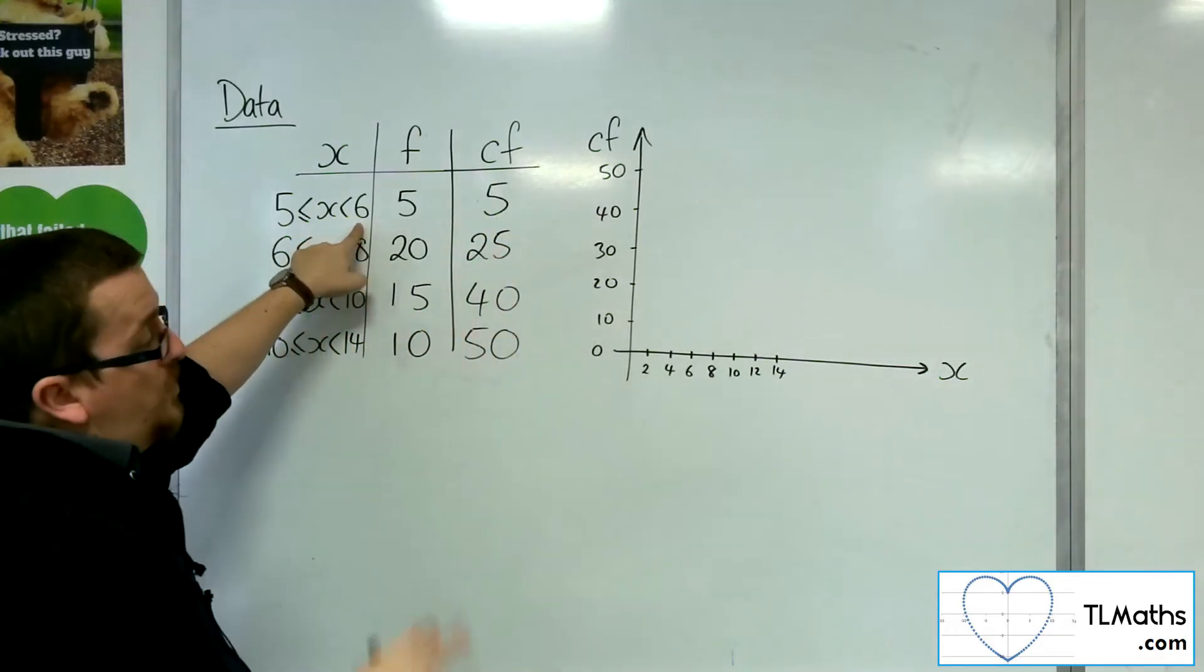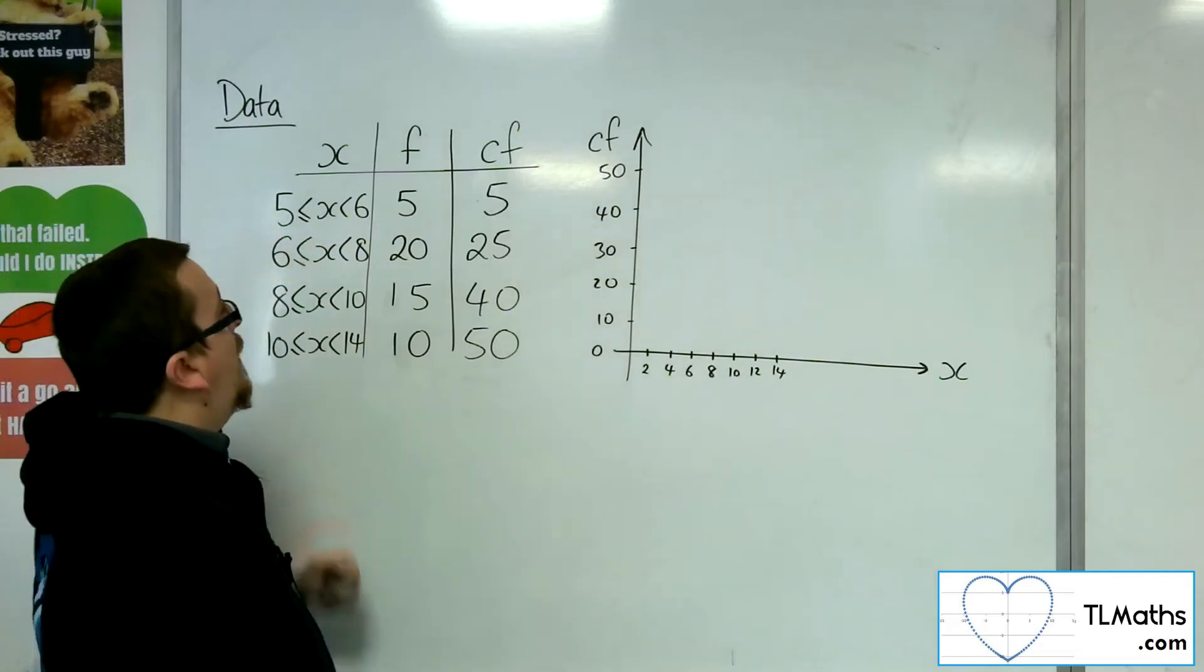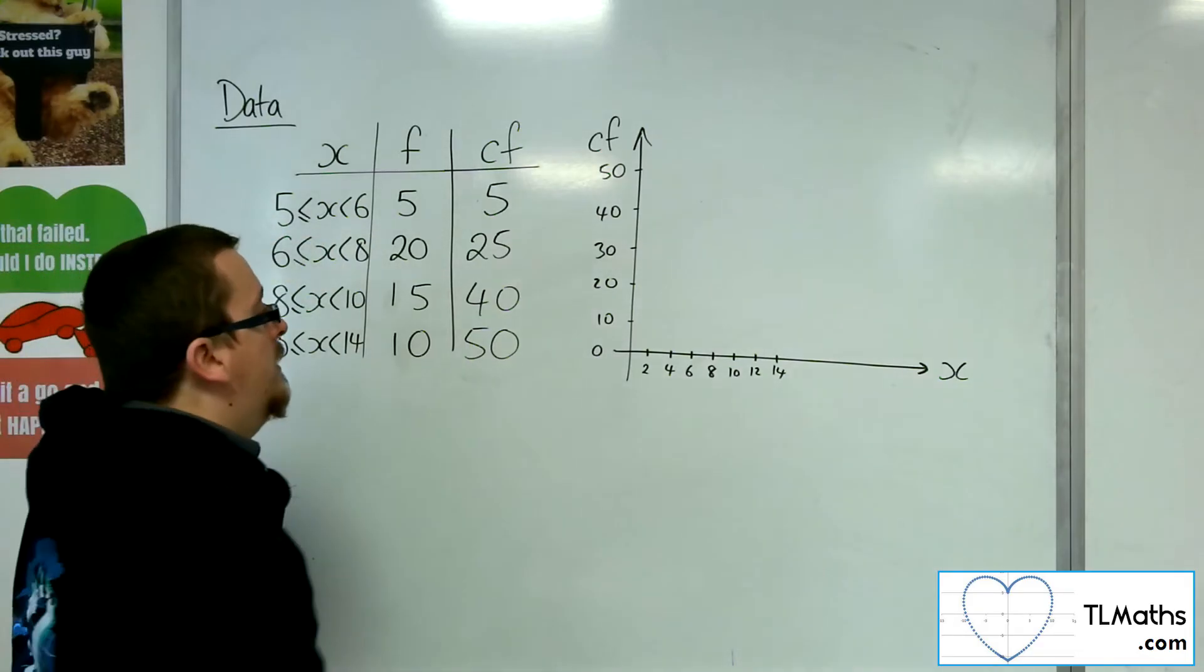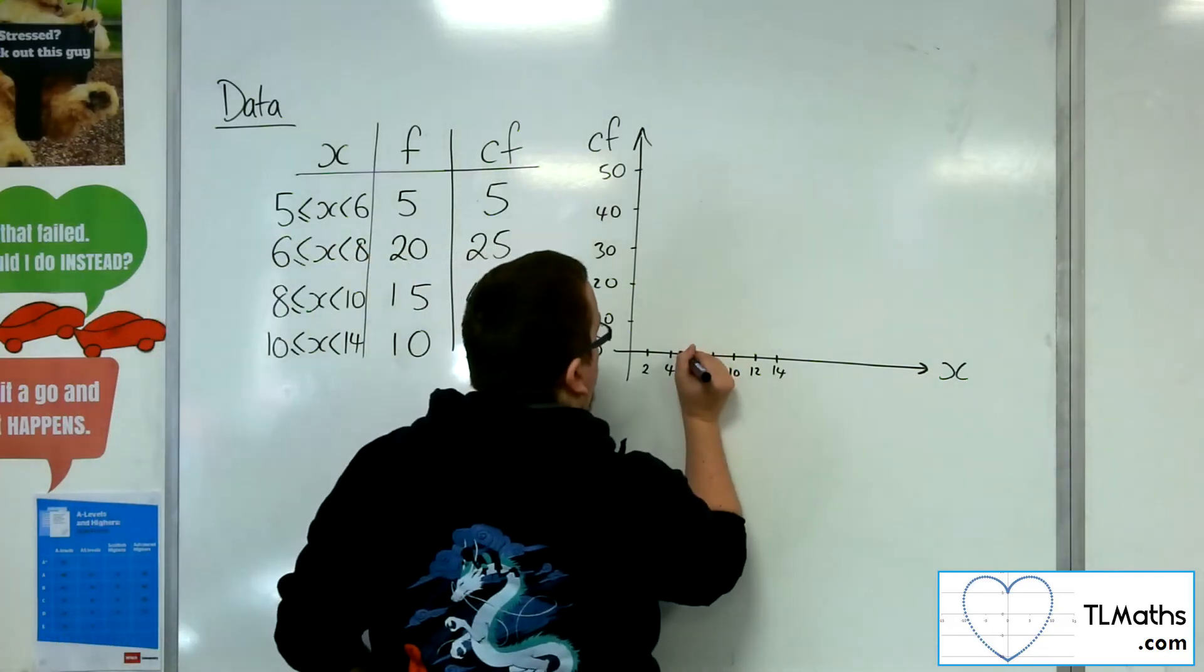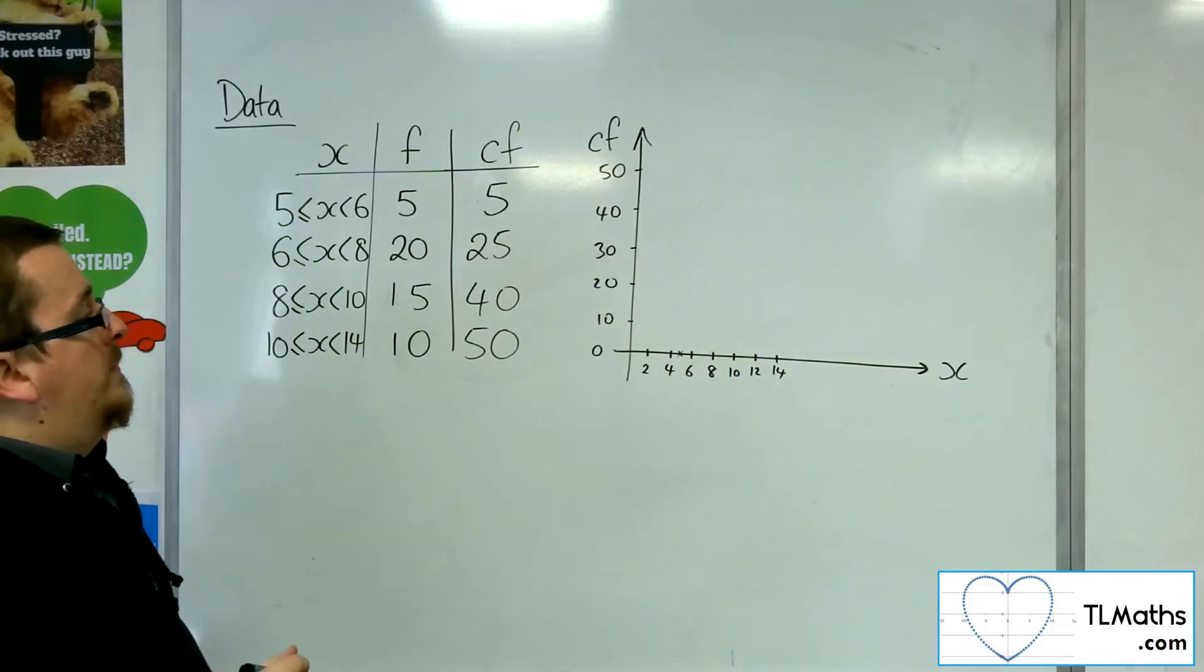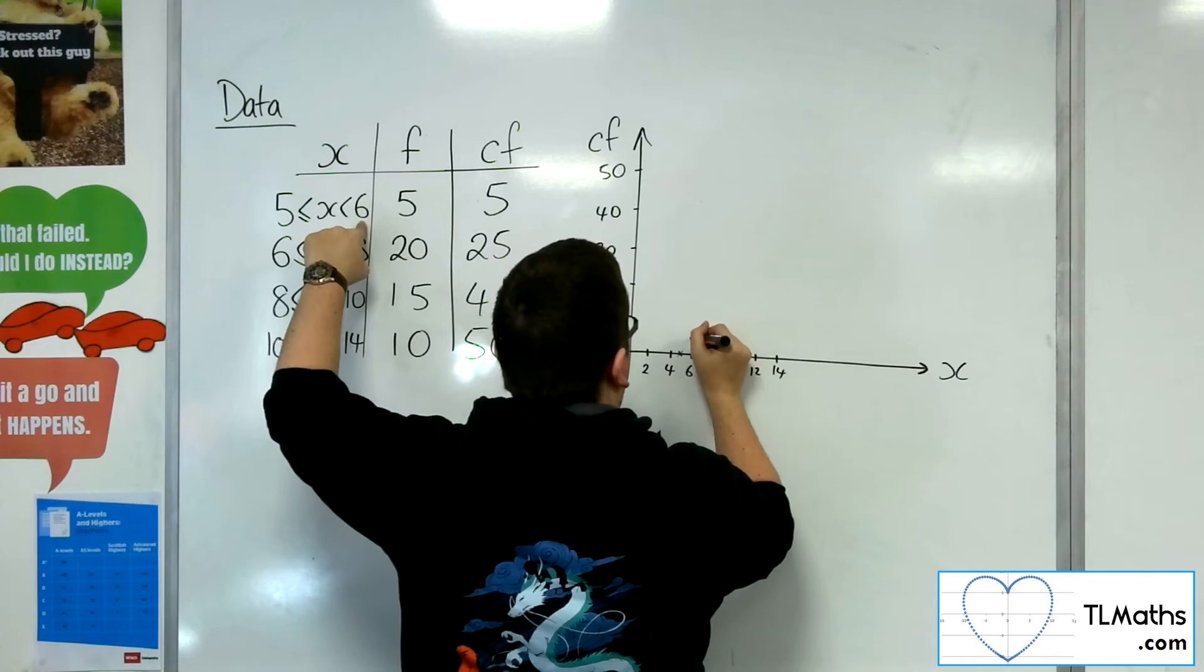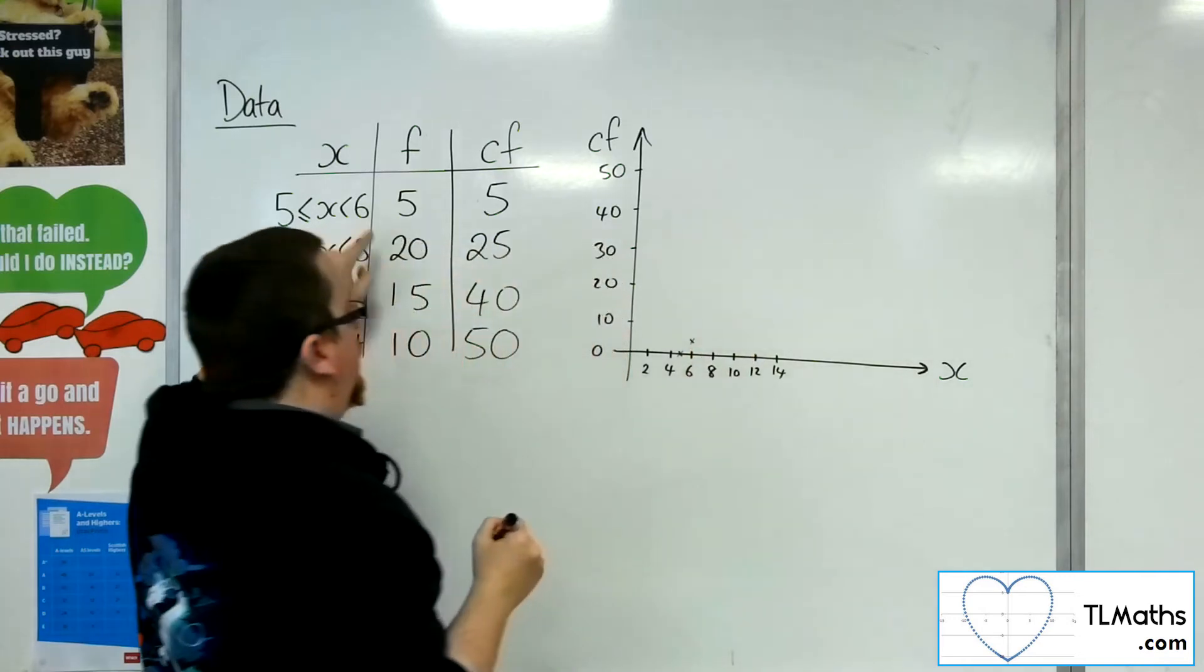Now the lowest point, just as a starting value, the lowest value for x is 5. Okay, so really we should be down at 5, 0 as our starting point, so that then we can go to 6, 5 as our next point along. Okay, so 6, 5.